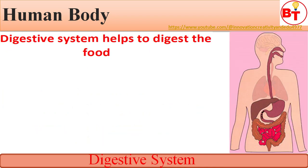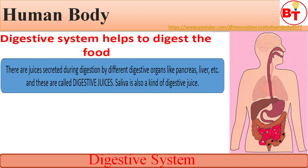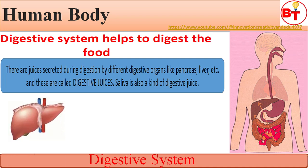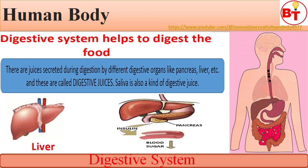In the digestive system, various juices are secreted during digestion by different digestive organs. In the stomach and small intestine, juices are secreted from the pancreas and liver, and these digestive juices help digest the food. Saliva is also a kind of digestive juice found in the mouth.